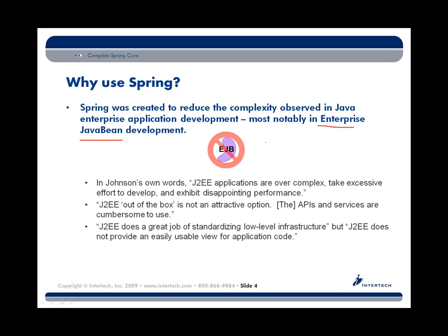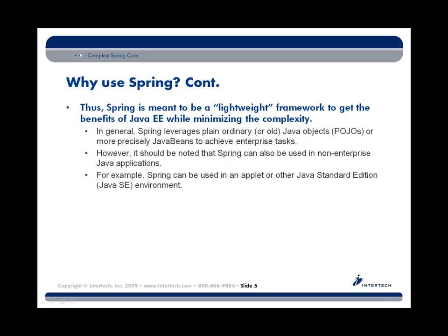How can we, out of the box, provide a more attractive environment? J2E does a great job of standardizing our low-level APIs and providing us a means to write once and run anywhere. But in many cases it's much too complex for the average developer to get into all the details of all those APIs in order to build even the simplest of applications. Spring is meant to be a lightweight framework — it tries to reduce the complexity you ordinarily find in a lot of the Java Enterprise APIs. Spring leverages plain old Java objects, POJOs.